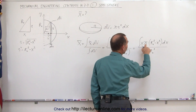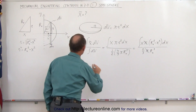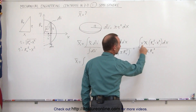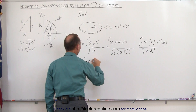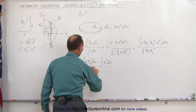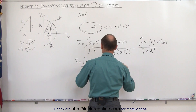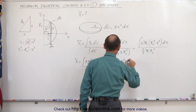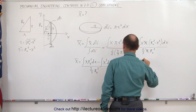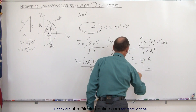Notice that π appears in both the numerator and denominator, so it cancels. Continuing with the simplification, the x-coordinate of the centroid equals the integral of x times r-naught squared dx minus the integral of x cubed dx, the whole thing divided by two-thirds r-naught cubed. Integrating, this equals x squared over 2 times r-naught squared, evaluated from 0 to r-naught, minus x to the fourth power over 4, evaluated from 0 to r-naught, all divided by two-thirds r-naught cubed.